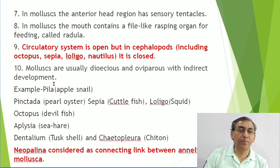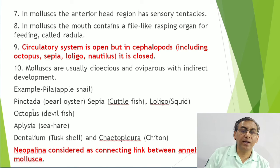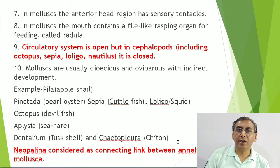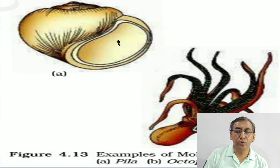Examples of Mollusca given in NCERT: Pila (apple snail), Pinctada vulgaris (Indian pearl oyster), Sepia (cuttlefish), Loligo (squid), Octopus (devilfish), Aplysia (sea hare), Dentalium (elephant tusk shell), and Chiton. Neopilina is considered a connecting link between Annelida and Mollusca. NCERT diagrams show Pila (apple snail) and Octopus (devilfish).